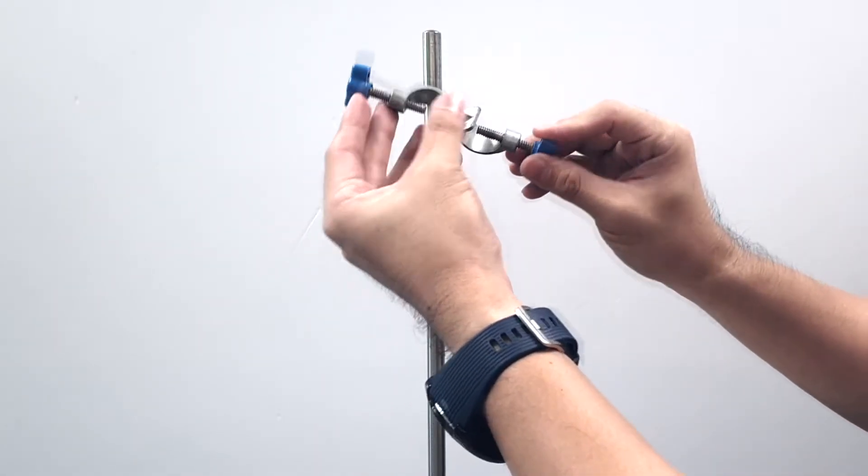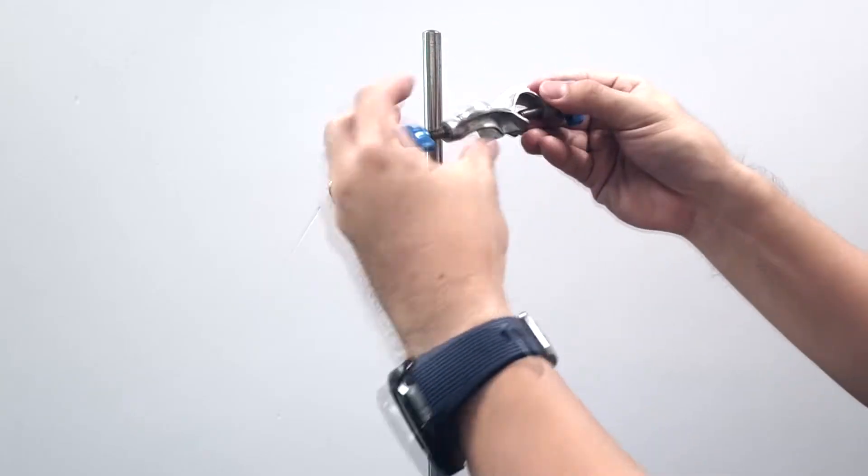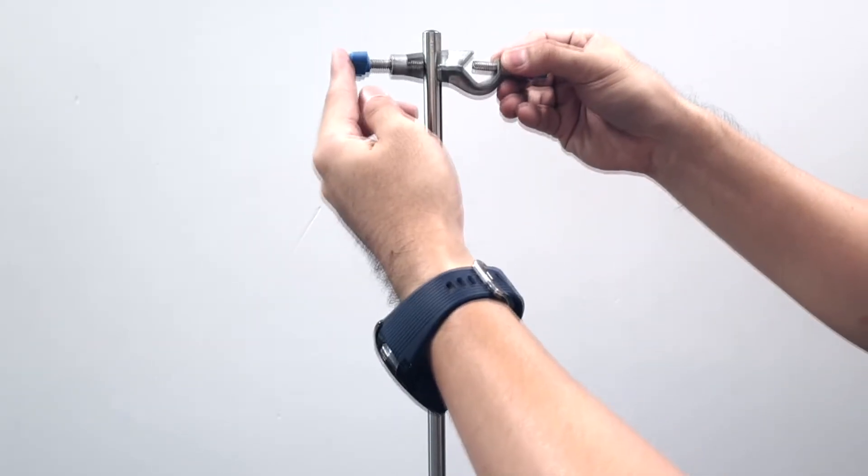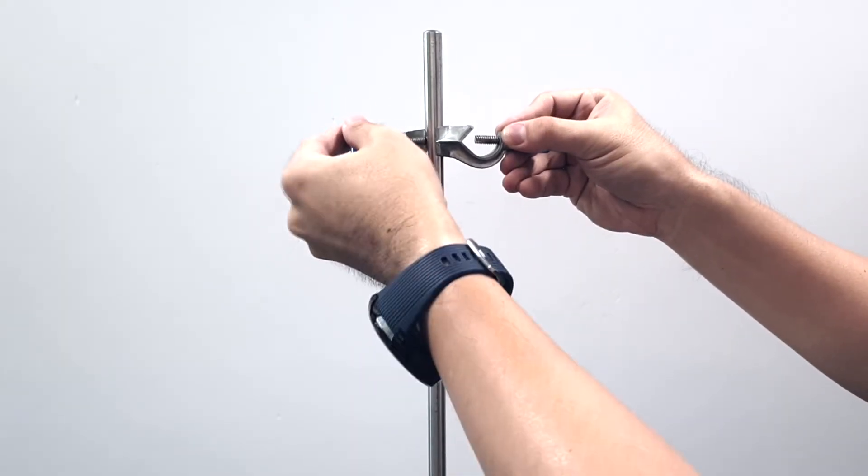The boss has two sides. Both are the same, so it doesn't matter which side you use. Insert the boss as shown and tighten it for the time being.